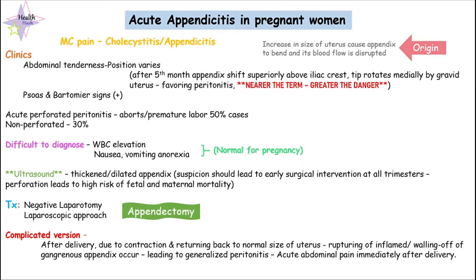Hi guys, it's Med by Health Hush, and in today's video we'll be speaking about acute appendicitis in pregnant women. Usually in pregnant women, the most common reasons for acute abdominal pain are cholecystitis and appendicitis, but today's topic will be mainly focusing on appendicitis in pregnant women.